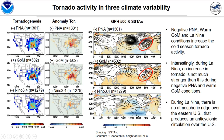This is the 500 hectopascal geopotential height and SST anomaly. Both the negative PNA and warm Gulf of Mexico cases show an atmospheric ridge over the eastern U.S. and Gulf of Mexico. Even though the warm Gulf of Mexico case is weaker, the structure of the geopotential height is similar to the negative PNA case. This generally high-low-high pattern is consistent with the negative PNA pattern.